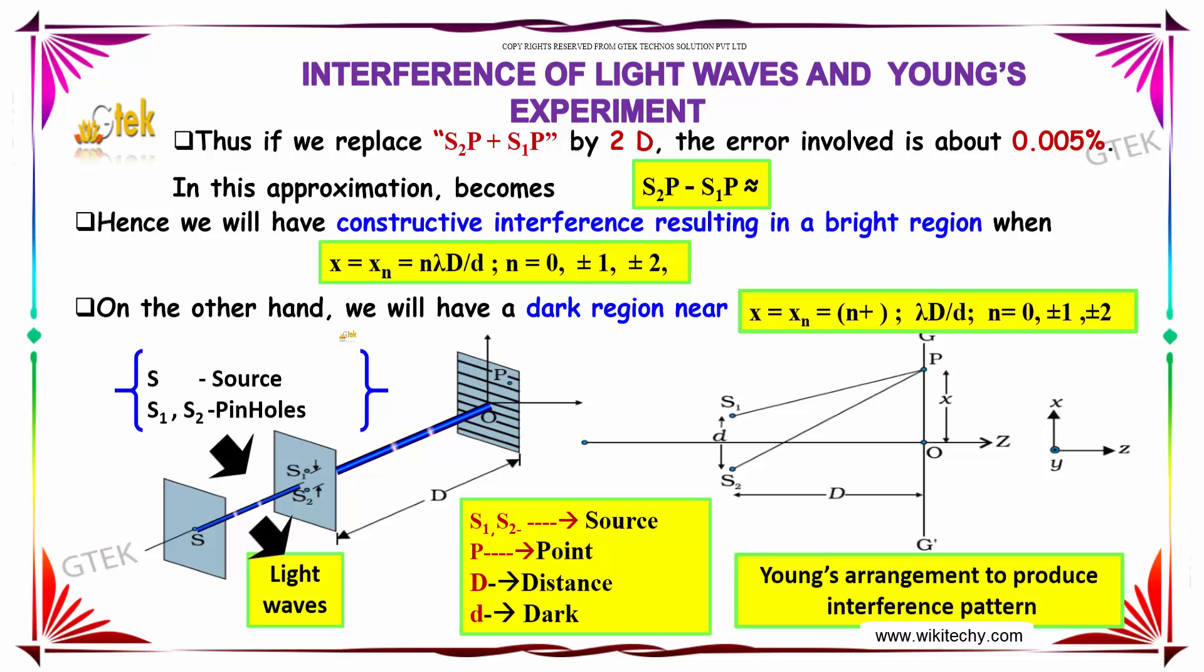On the other hand, we will have a dark region near x = xn = (n + 1/2)λD/d, where n = 0, ±1, ±2, and so on.